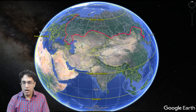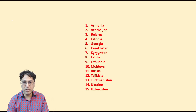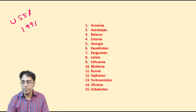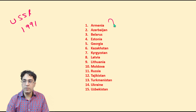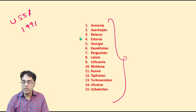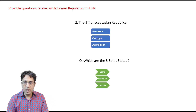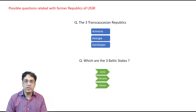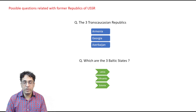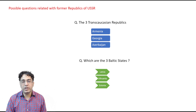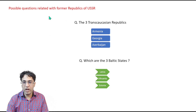Russia came into being in its present state after the disintegration of the USSR in 1991, and some 15 independent countries emerged from that disintegration. It may be a little challenging to remember the names of these countries, but we should know the names that can come as questions in the exam, so here I've prepared some possible questions.